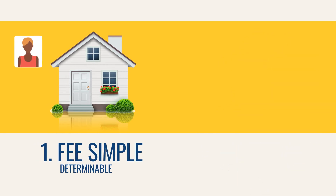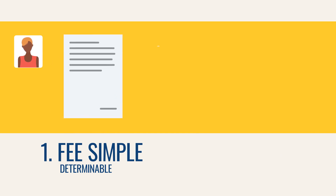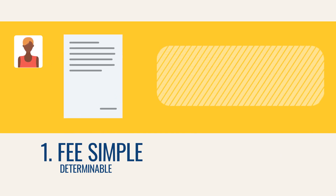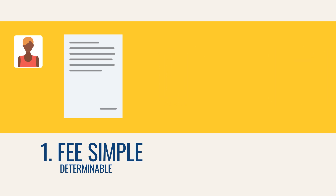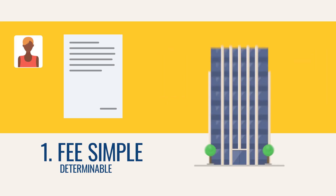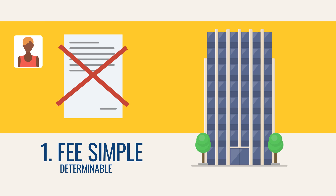If the grantor uses durational language in the condition, such as 'to Adam as long as the land is used for a park,' then upon the happening of the specified event — the land being used for something other than a park — the estate will automatically terminate or revert back to the grantor or the grantor's estate. This is called a fee simple determinable.